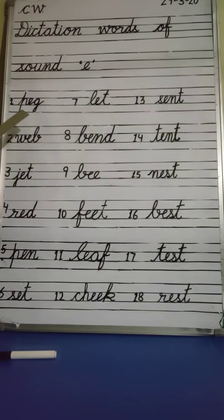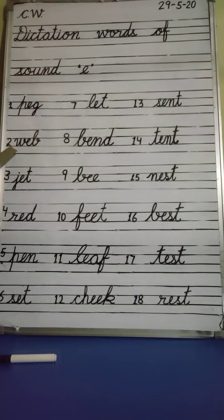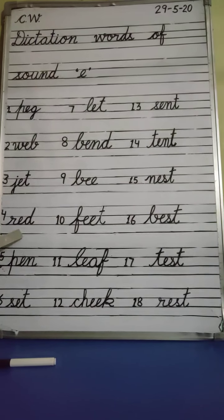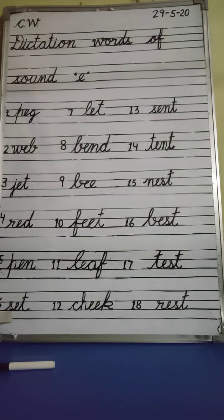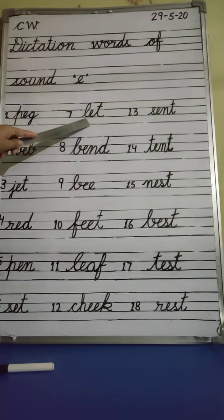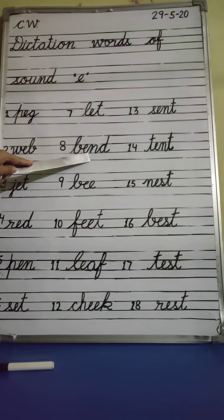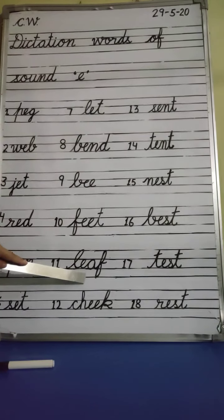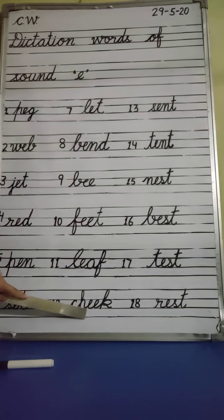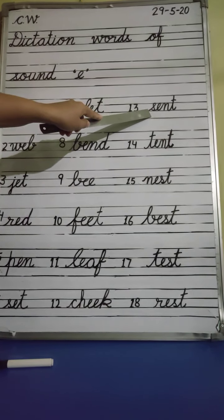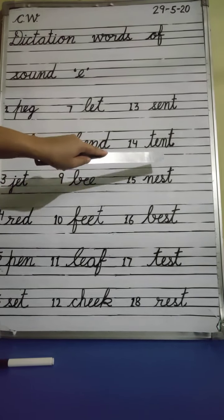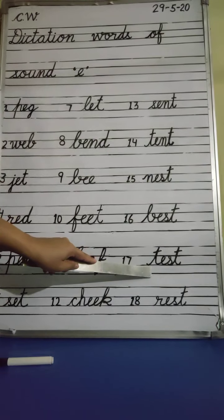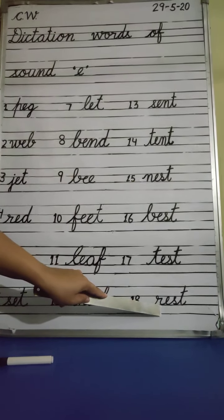Again, we will repeat all the words. Number 1: Peg. Web. Jet. Red. Pen. Set. Let. Bend. Bee. Feet. Leaf. Cheek. Sent. Tent. Nest. Best. Test. Rest.